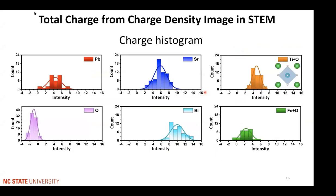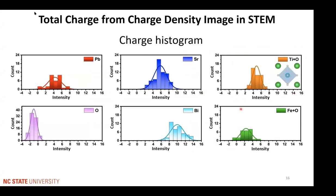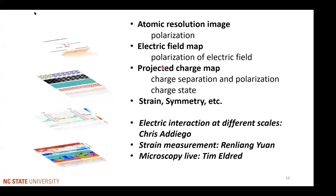In 4D STEM image, we can also locate the positions of each atom, define the boundary of the atom charge by searching for the local minima in the map, and then integrate the charge intensity inside the area to calculate the total atomic charge. Here is the example measurement using several perovskite oxide materials. We find a very good linear relationship of the measured total charge with those derived in DFT calculations. Basically, with 4D STEM, we can examine multiple materials properties. At the atomic scale, we can measure the polarization, we can see the electric field, and the projected charge map can be calculated and used to measure the total charge of atoms. And next, Chris will show you how electric interaction can be probed at different scales using 4D STEM. And Ren Liang will talk about strain measurement.